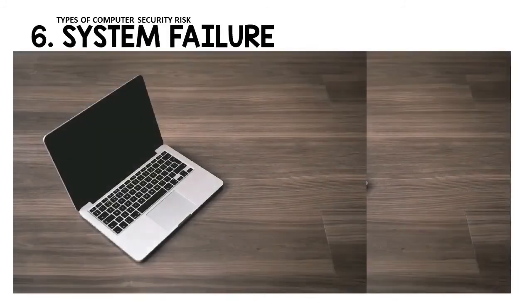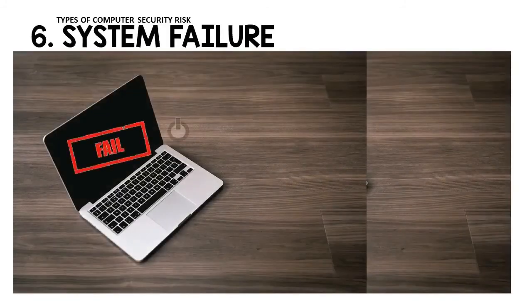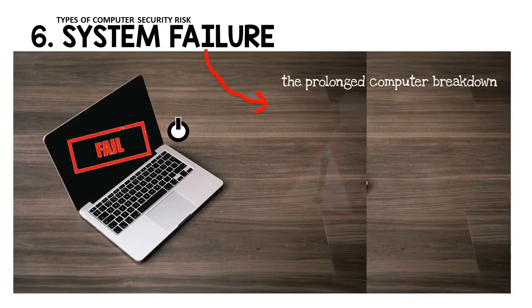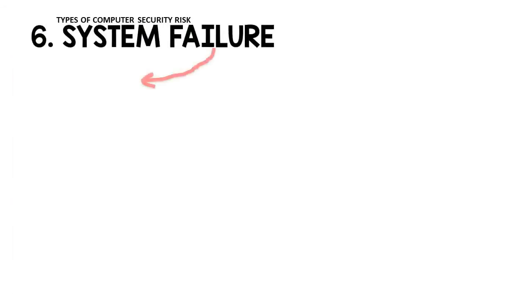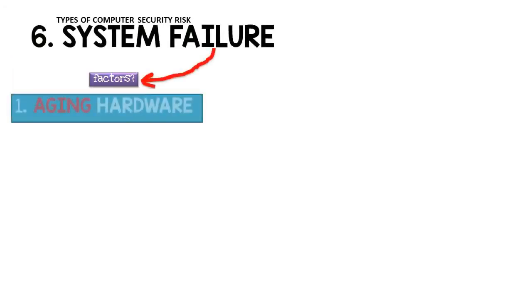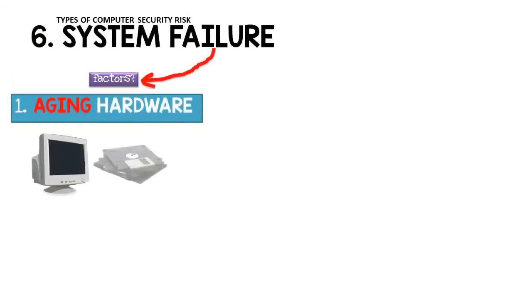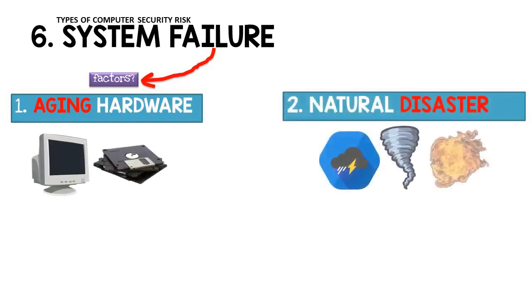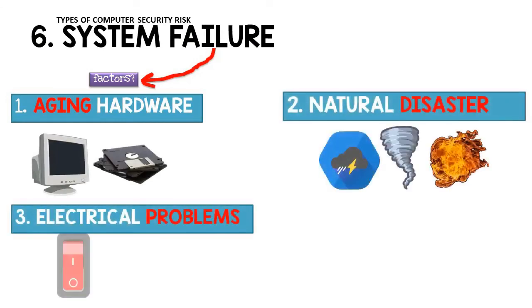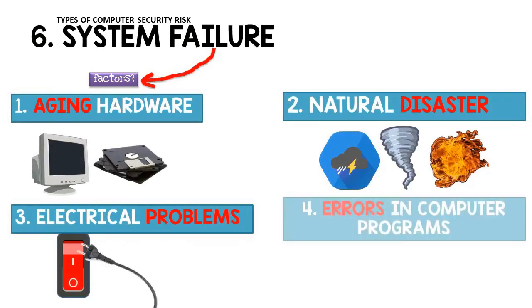The sixth risk is system failure, which is the prolonged computer breakdown. Factors that lead to system failure include aging hardware, natural disasters, electrical problems, or errors in programs.